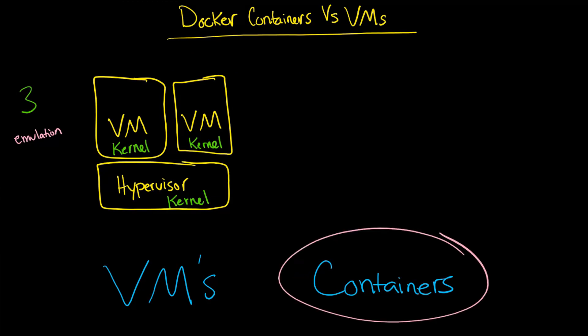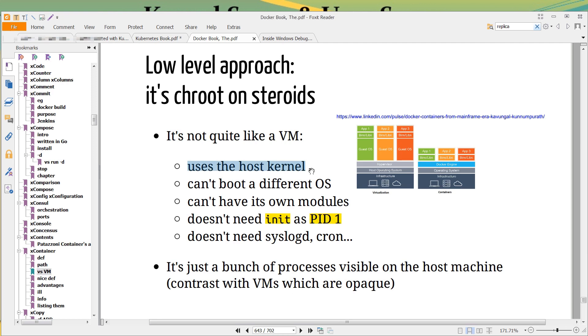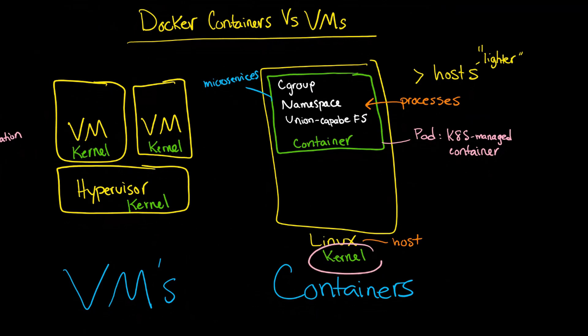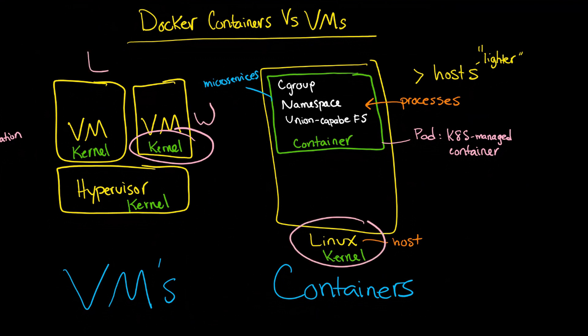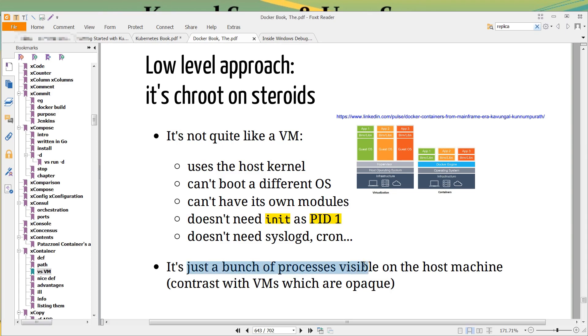Once we start talking about containers, things change. First of all, we reduce the kernel down to one. You could load different operating systems — you could have Windows here and Linux here — but with containers you always have the same host, the same kernel, and you always boot into the same OS. You just have a bunch of processes on the host.